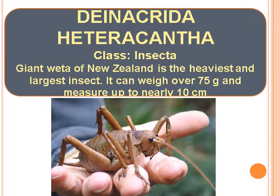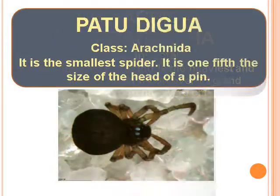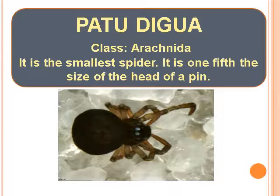Deinacrida Heteracantha — Class Insecta, Giant Weta of New Zealand is the heaviest and largest insect. It can weigh over 75 grams and measure up to nearly 10 cm. Patu digua — Class Arachnida, is the smallest spider; it is one-fifth the size of the head of a pin.